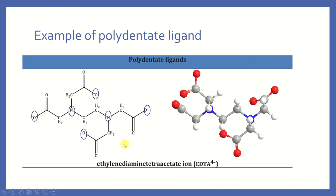And for the polydentate ligand, there is just one example: EDTA, which stands for ethylenediamine tetra-acetate ion. One EDTA has six points where it can bond to the metal ion.